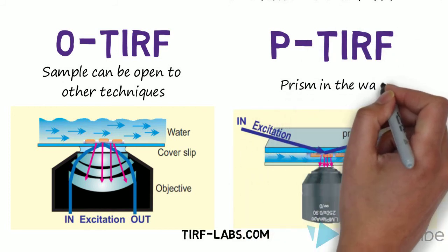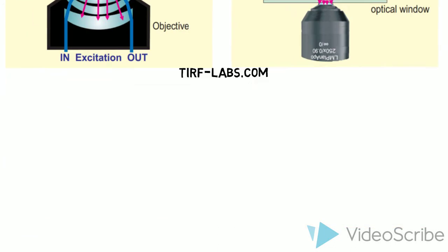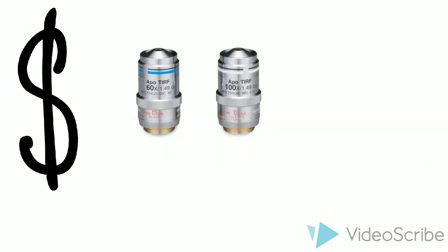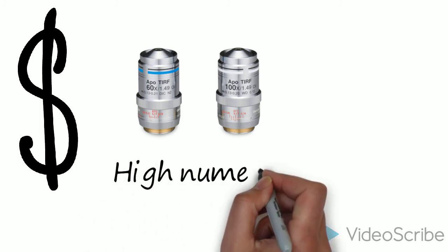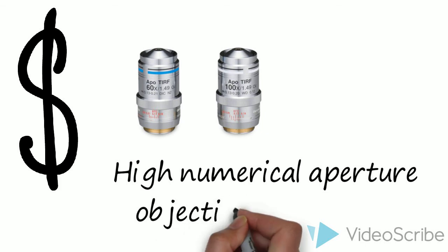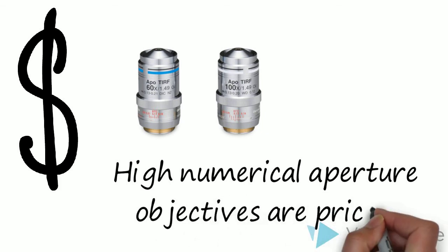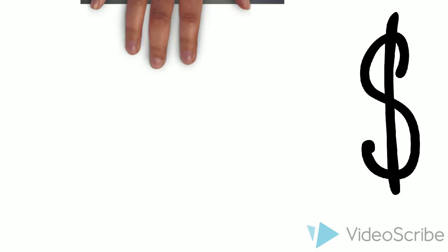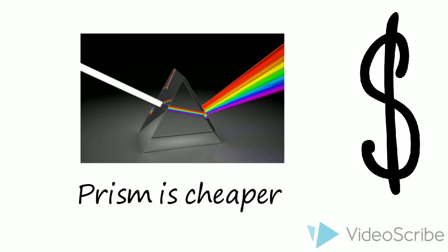When it comes to money, P-TIRF is by far the financially friendly option. To get a high numerical aperture objective lens capable of pulling off TIRF, you must be willing to spend a couple thousand dollars on the objective alone. P-TIRF does not require such expensive lens because the critical angle is achieved with a prism.